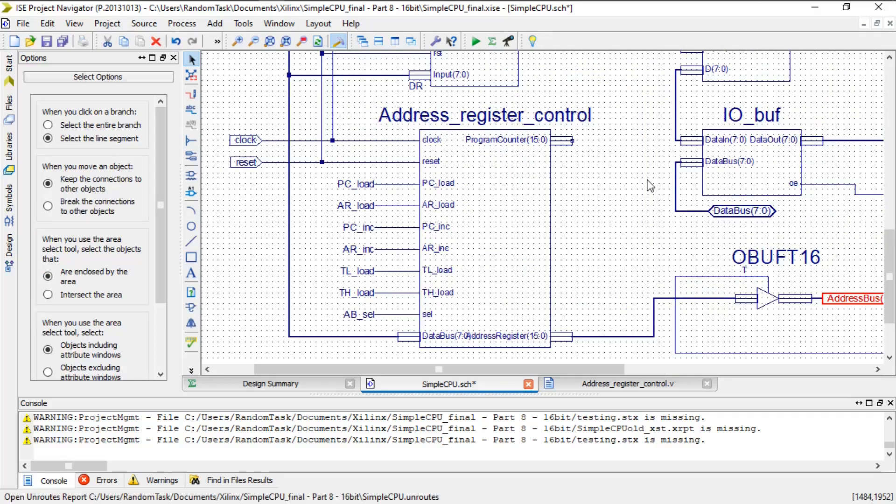The program counter output is unconnected for now. The existing instructions have no need for it. But in a later video, when the call instruction is added, the program counter will need to be saved, and it will be used then.